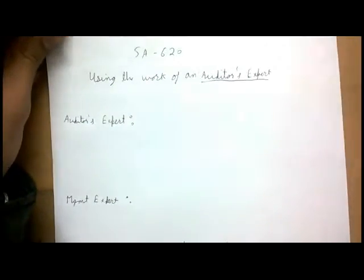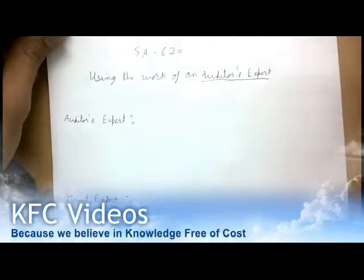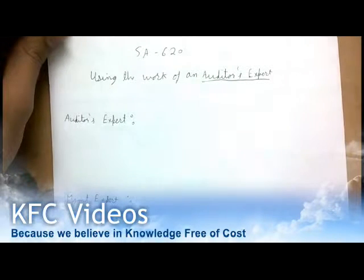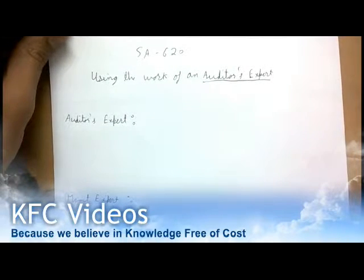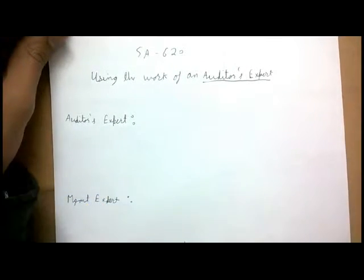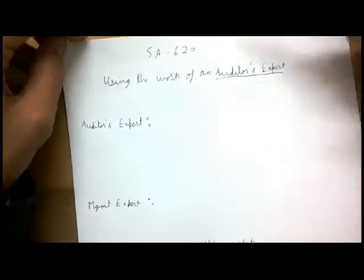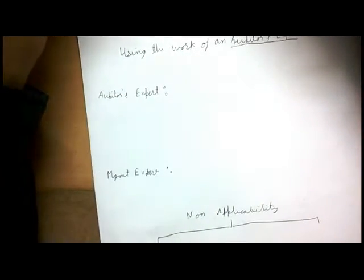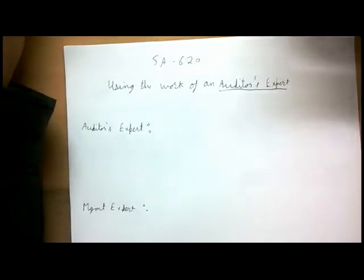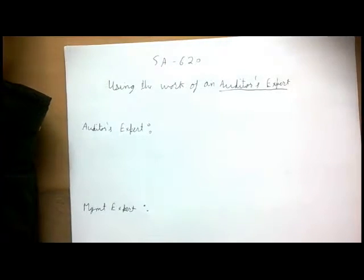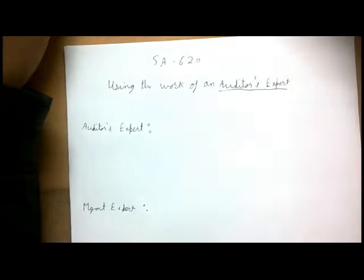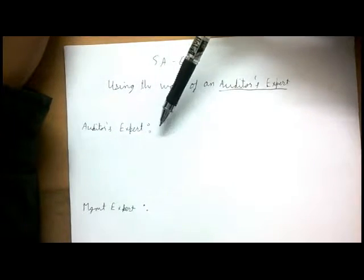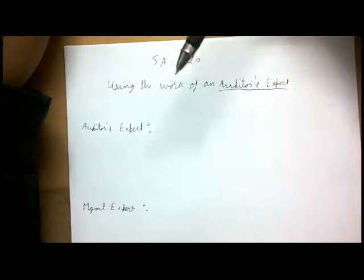This video covers ISA 620, 'Using the Work of an Auditor's Expert.' We have covered another auditor and internal auditor in previous videos under ISA 600 and 610, so now we are on ISA 620. The first thing in this standard is the auditor's expert. The auditor himself is an expert in accounting and auditing, so an auditor's expert is not going to be an expert in those fields.